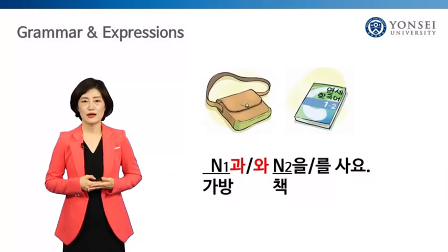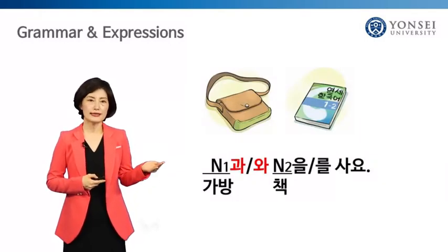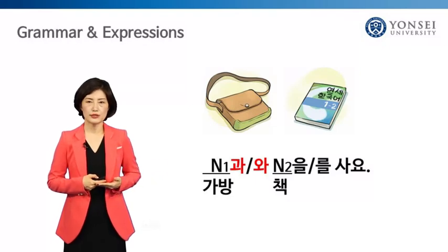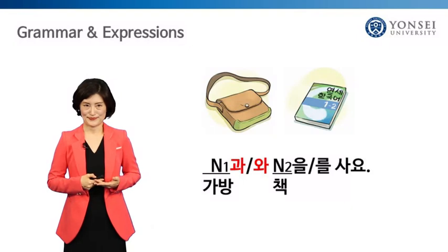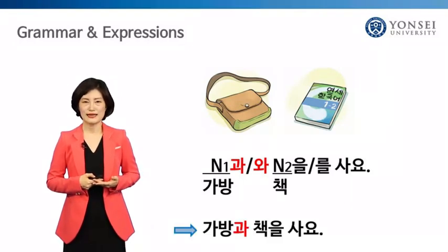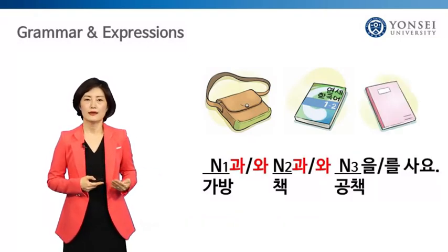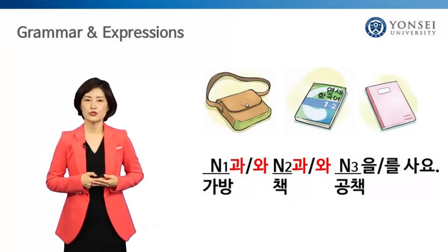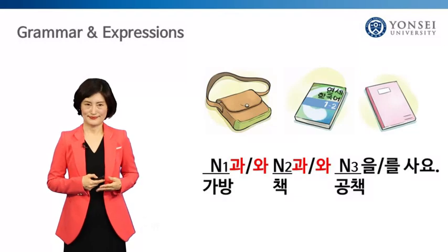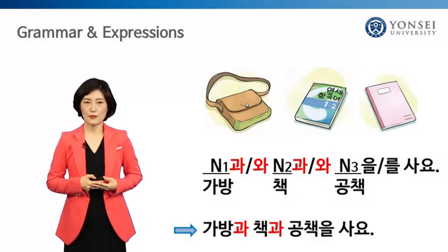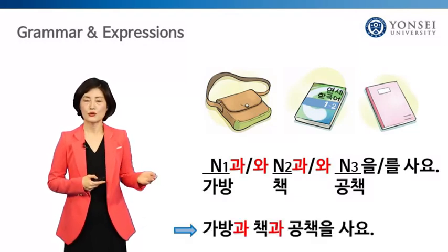Let's look at other examples. If your friend is buying a bag and a book at the bookstore, how can you say that in Korean? That's right — say, 가방과 책을 사요. If you're buying more than two things, for example, a bag, a book, and a notebook, you can include the nouns using 과, 와: 가방과 책과 공책을 사요.